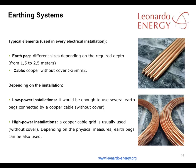Earthing pegs connected by uncovered copper cable should be sufficient for lower power installations. High power installations usually use an uncovered copper cable grid, though earthing pegs can also be used in certain situations. A typical earthing system for your PV facility will require 35mm uncovered copper cable together with earthing pegs of different sizes depending on the required depth, normally between 1.5 and 2.5 meters.